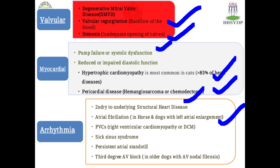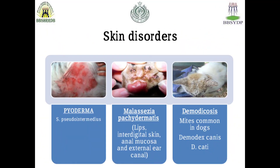Persistent atrial standstill and third-degree atrioventricular block in older dogs with atrioventricular nodal fibrosis are also common conditions causing arrhythmia, and these can be diagnosed through electrocardiography. In the next lecture, we are going to discuss skin disorders. Thank you very much.